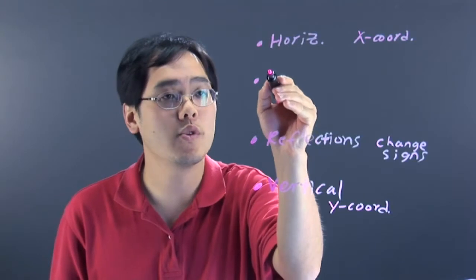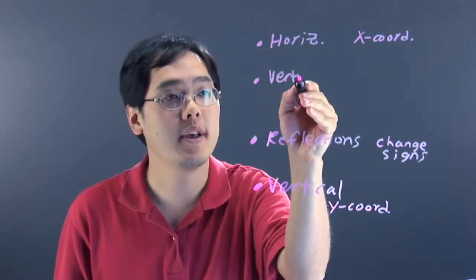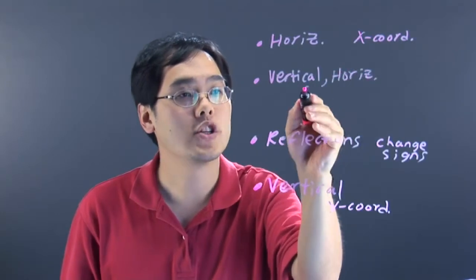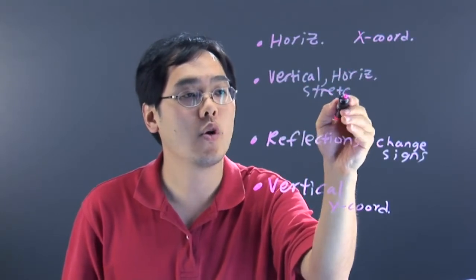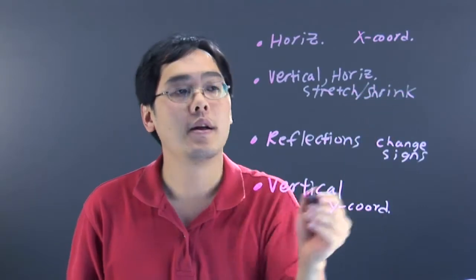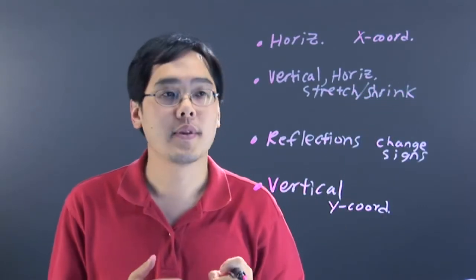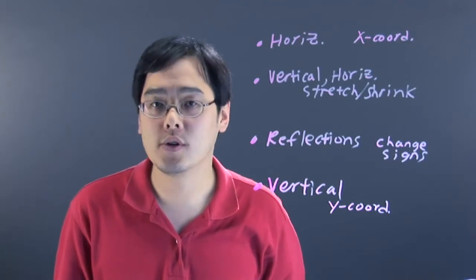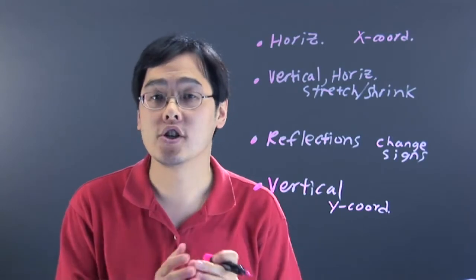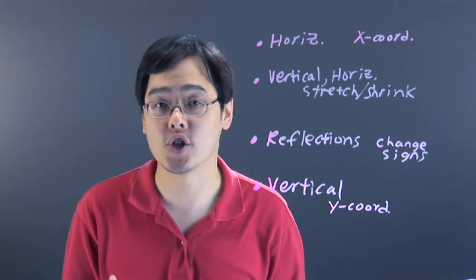The last kind of transformation we're going to talk about is vertical as well as horizontal stretching or shrinking. This means the graph can either vertically grow faster than normal or slower than normal, or horizontally stretch or shrink depending on the situation.